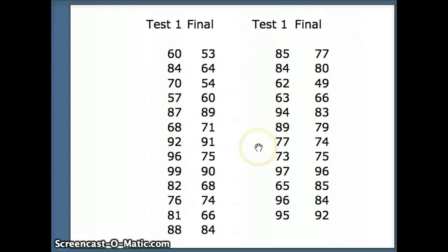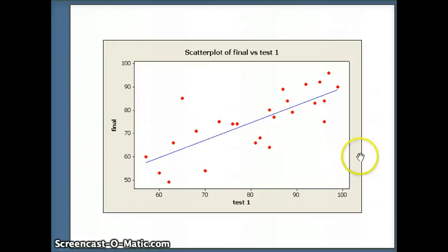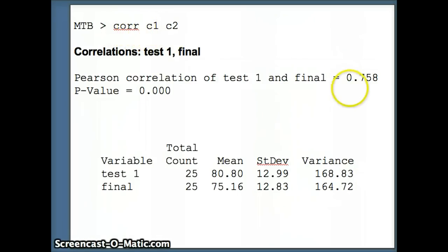We have a couple of anomalies where there is a low score on the first test but a high score on the final. We need to get r, the correlation coefficient, s-sub-y, and s-sub-x. Here is a picture of the data and the computer-drawn regression equation. The data points are fairly tightly packed so we expect the correlation to be fairly high. Using Minitab with the command CORR C1 C2, the correlation coefficient is .758.